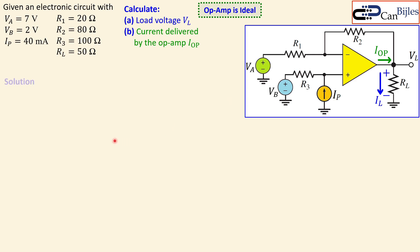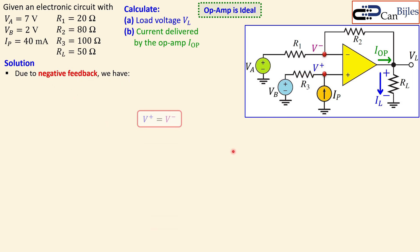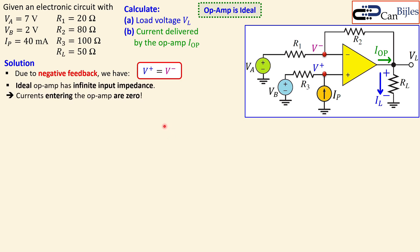Due to negative feedback, we know these two nodes are equal: V+ equals V−. Also, for an ideal op amp, the input impedance is essentially infinite, so the currents entering the op amp terminals are all zero — both I− and I+ in these branches must be zero. We will use these two properties throughout our analysis.